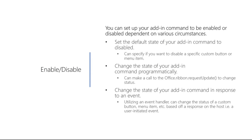With the new addition of Enable/Disable to PowerPoint and Word, you can now set up your add-in commands to be enabled or disabled depending on various circumstances. You can set the default state to disabled, change the state programmatically throughout different events by calling office.ribbon.requestUpdate, or change the state in response to an event using an event handler to change the status of a custom button or menu item based on something occurring in the document.